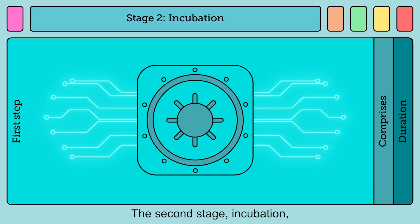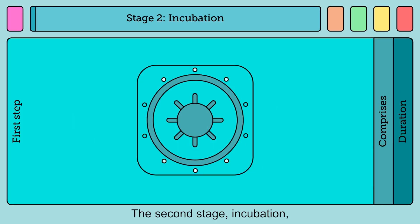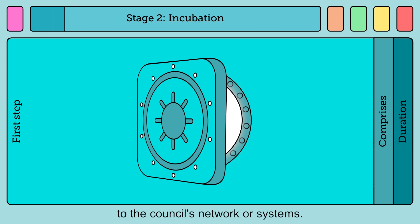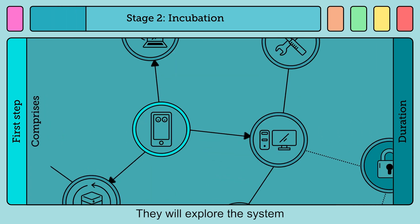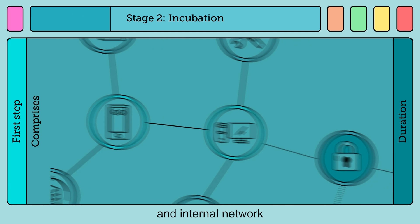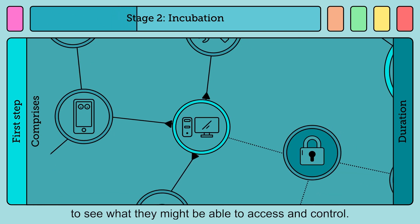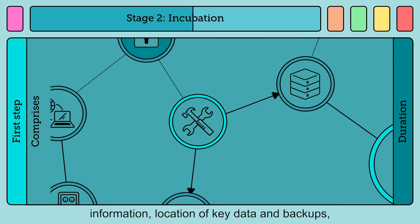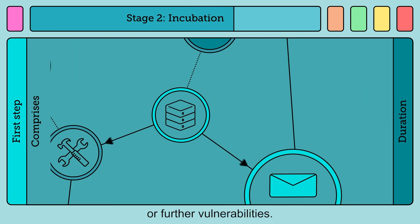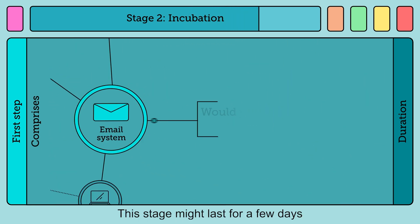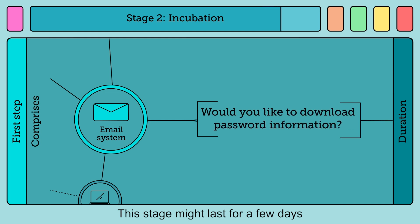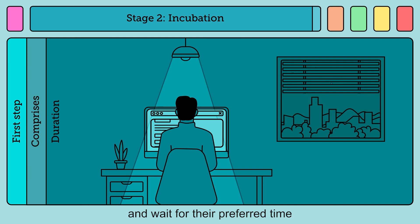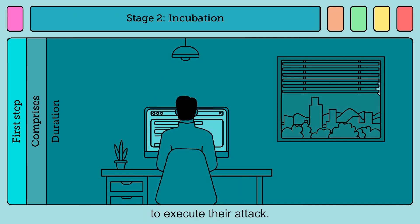The second stage, Incubation, begins once the actor has successfully gained access to the Council's network or systems. They will explore the system and internal network to see what they might be able to access and control. They may be looking for password information, location of key data and backups, or further vulnerabilities. This stage might last for a few days or stretch into months, as they gather information and wait for their preferred time to execute their attack.